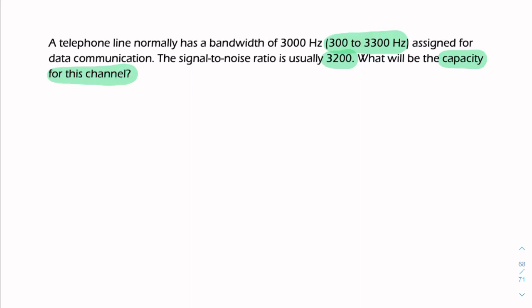In theory, the Shannon-Hartley theorem states that the channel capacity is the product of the bandwidth and log to the base 2 of 1 plus the signal-to-noise ratio.